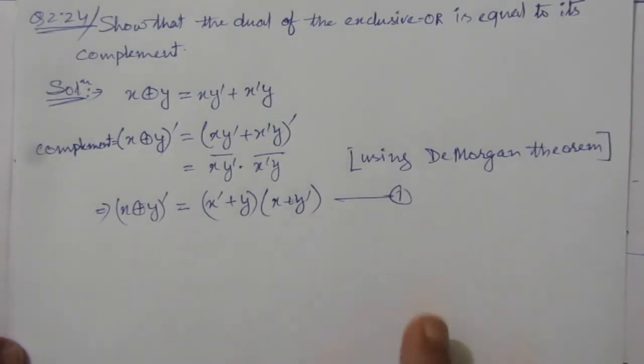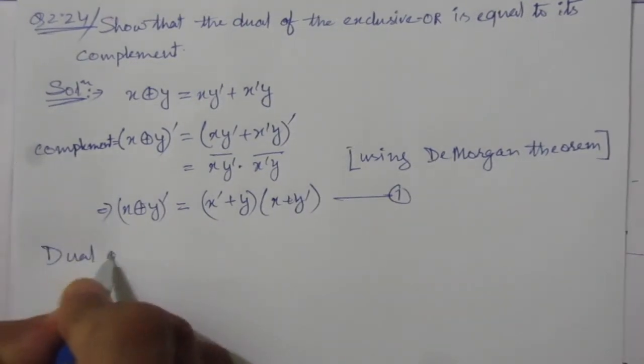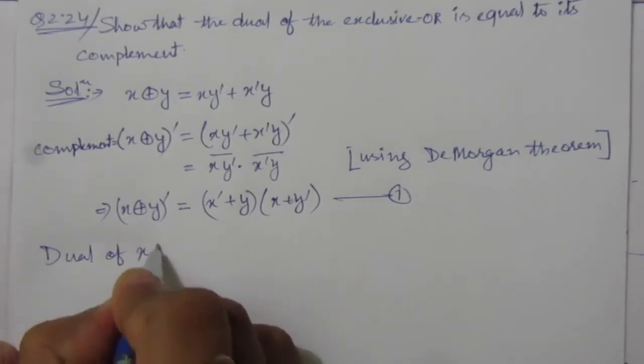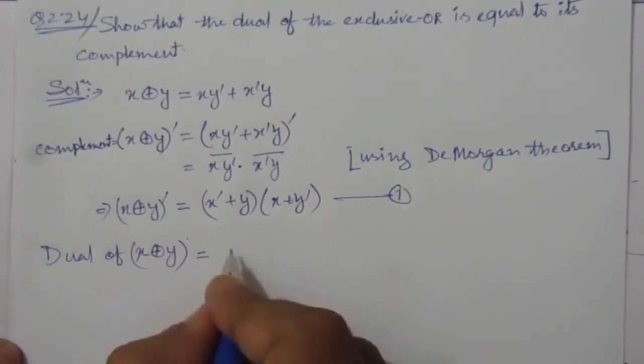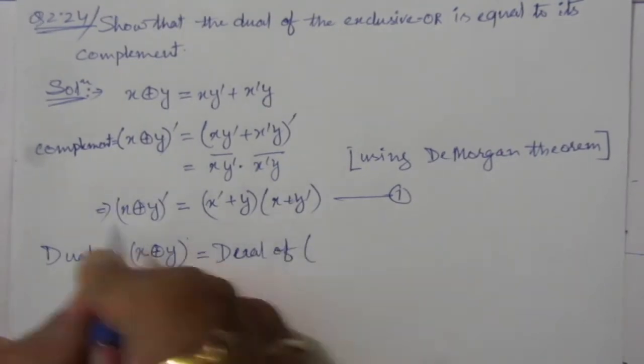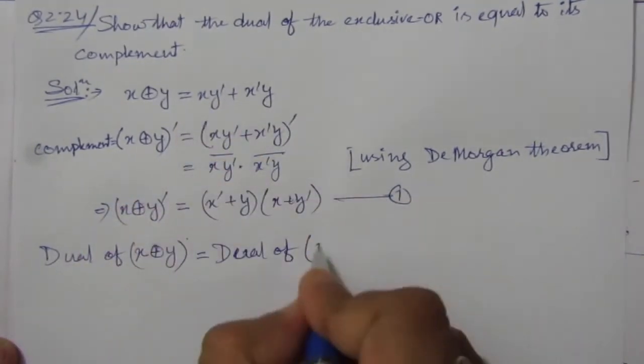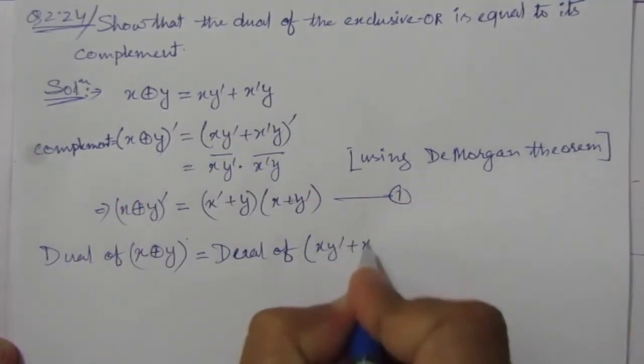Now we have to find out the dual of x XOR y, equal to dual of x y bar plus x bar y.